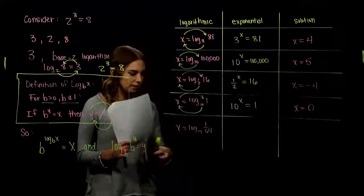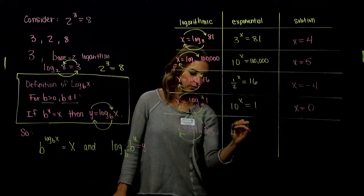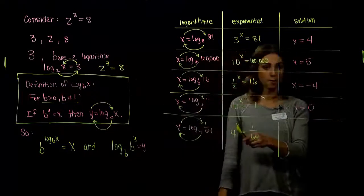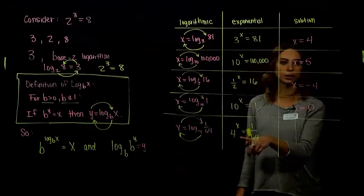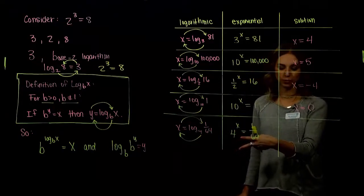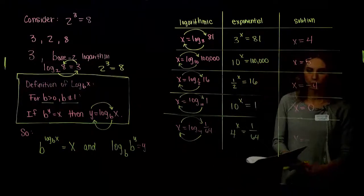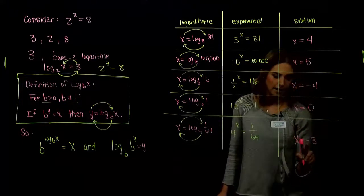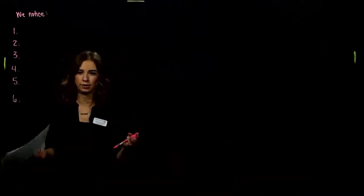For log base 4 of (1/64): converting gives 4^x = 1/64. Since 4 needs to get smaller, x must be negative. 4^3 = 64, so 4^(-3) = 1/64, giving x = -3. A negative power means invert the base and raise it that many times. Now that we can convert between log and exponential forms, let's look at the graphs of logarithms.